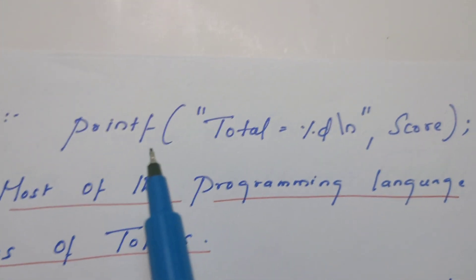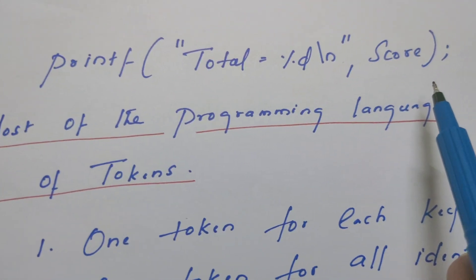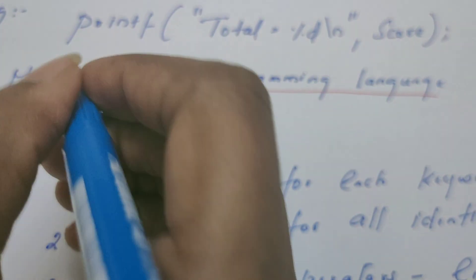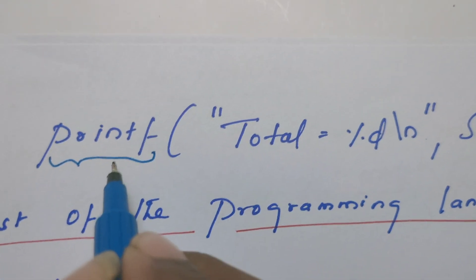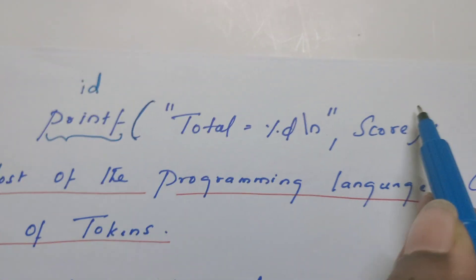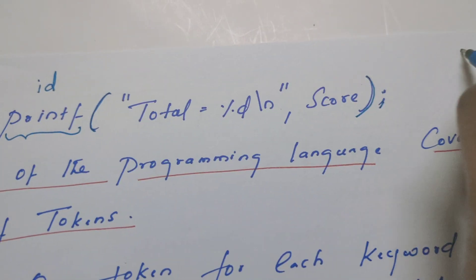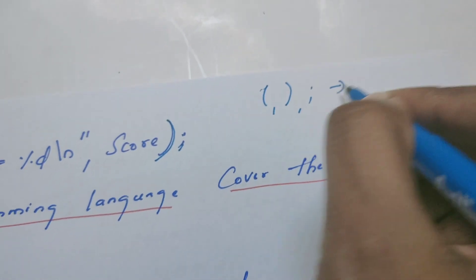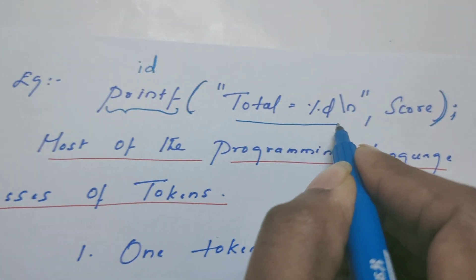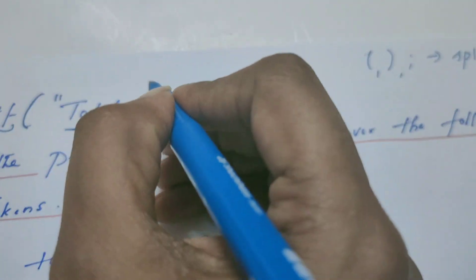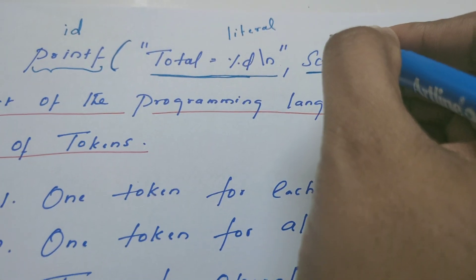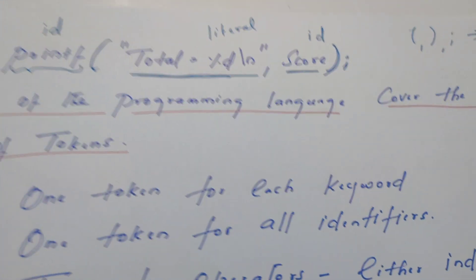For example, consider a statement being read by the lexical analyzer. It reads character by character. Once it reads printf, it recognizes it as an identifier (id). The open parenthesis, close parenthesis, and semicolon are recognized as special symbols or special characters. Whatever is enclosed within the double quotes is recognized as a literal. A variable name like score would be recognized as an identifier.